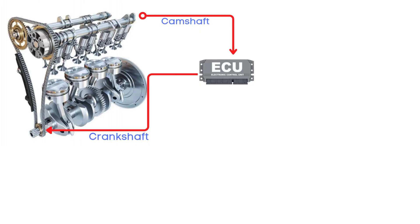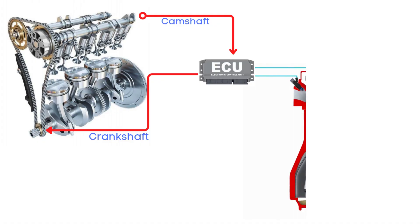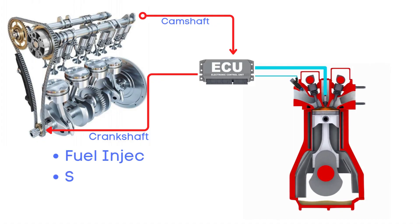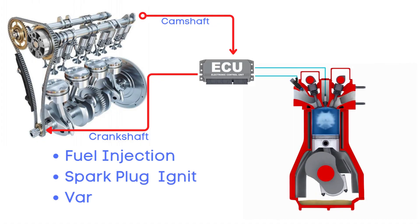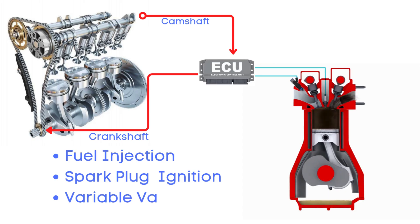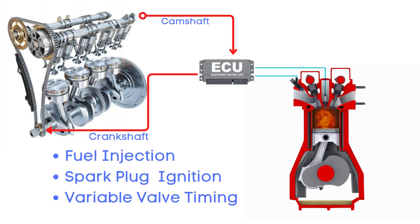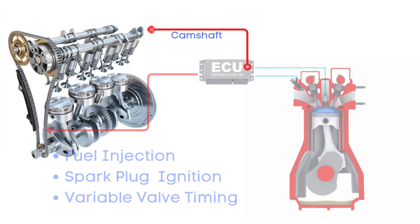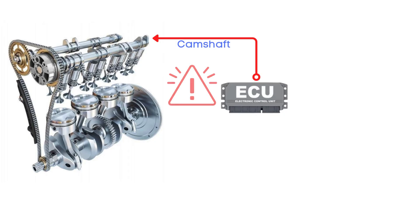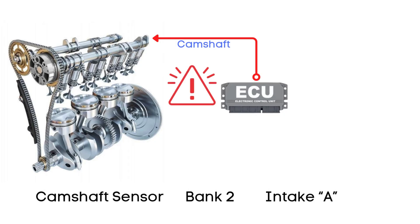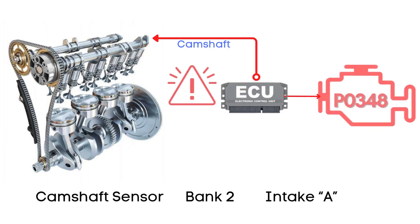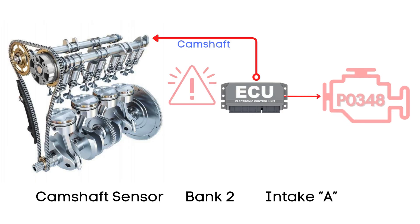With all this data, the ECU can precisely control things like fuel injection, ignition timing, and even when the valves open and close. But if there's a problem with the camshaft position sensor circuit, the ECU can't get the right camshaft data, and it triggers the P0348 code to let you know something's off.